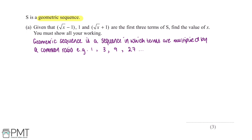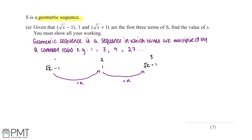So now with this knowledge we can start working out the question. We've been told that term 1 is √(x−1), term 2 is 1, and term 3 is √(x+1). If we let k be our common ratio, then √(x−1) multiplied by k gives us 1, and then 1 multiplied by k gives us √(x+1).